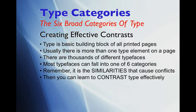There are thousands of different typefaces, and while a few folks might have some slightly different categories, these, as talked about in the Robin Williams book, are considered somewhat universal standards for categories. We break it down into six categories. Remember that it's the similarities that cause conflicts — choosing two different type styles from one category makes them slightly different, but they might fight each other, which is the one thing we want to avoid. What you want is to learn to contrast type effectively.